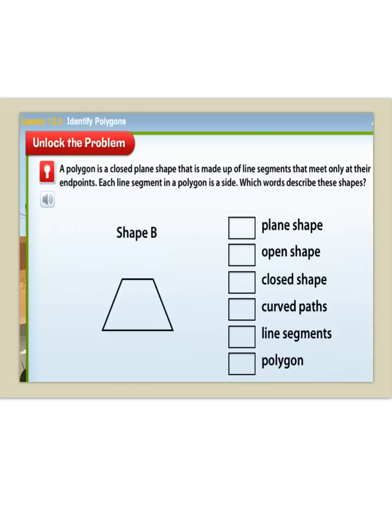Now, let's unlock this problem. A polygon is a closed plane shape that is made up of line segments that meet at their endpoints. Each line segment in a polygon is a side. Which words describe these shapes? How about plane shape? Is our shape flat? The answer is yes. So this is a plane shape.